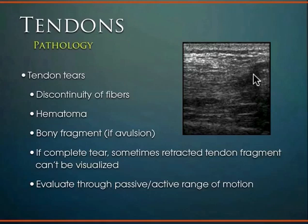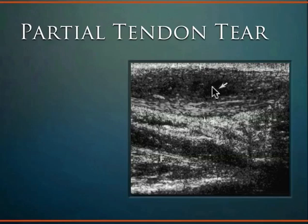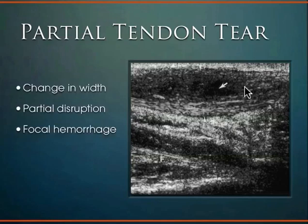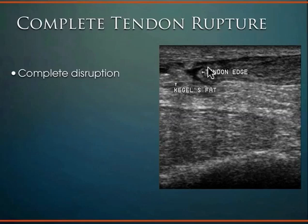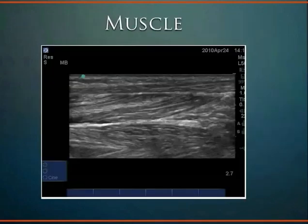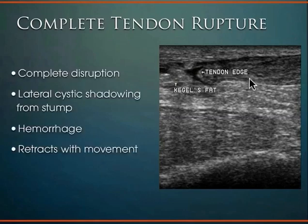An example of a partial tear: the normal tendon fibrillar hyperechoic pattern comes through, and more superficially there is a localized hematoma with disruption of tissue architecture and distention from that hematoma — that's a partial disruption with focal hemorrhaging. For a complete tear, you can see the leading edge of the tendon disconnected with obvious disruption, retraction of the tendon, and localized fluid collection. Taking that through range of motion, you'd see the tendon stub retract dynamically.